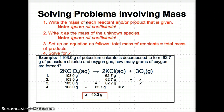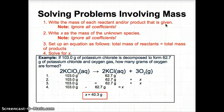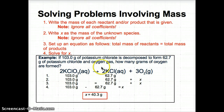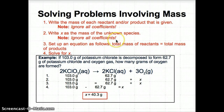Now let's talk about how to solve problems involving mass. This involves a four-step process. Step one: write the mass of each reactant and product that is given directly underneath each one as given in the problem. Ignore the coefficients — don't multiply anything. Step two: write X as the mass of the unknown species — anywhere they don't give you a mass, write X. Again, ignore all coefficients.